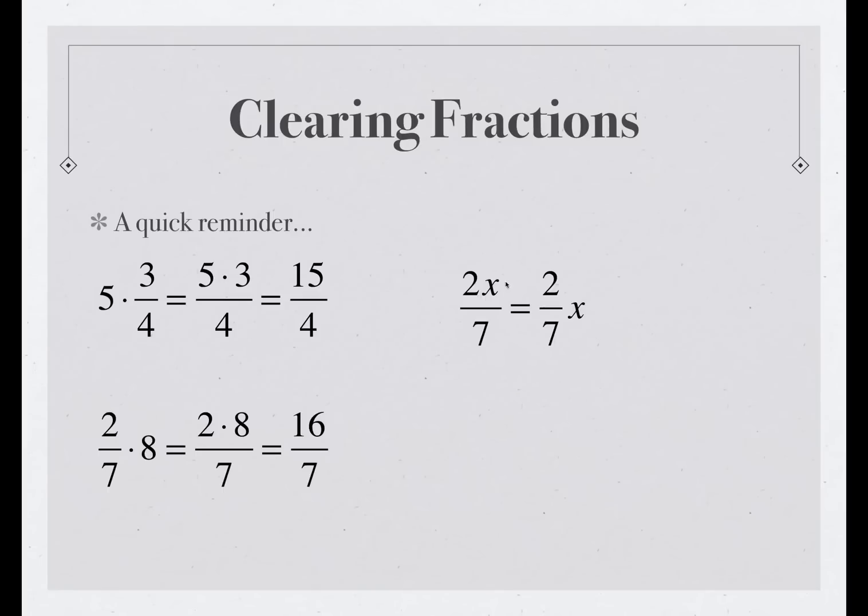In the first case, even though it's written like this, the coefficient of x is 2/7. Here's another example. If you have x over 18, that is the same thing as 1/18 times x. The coefficient of x in both cases is 1/18, whether it's written this way or that way.